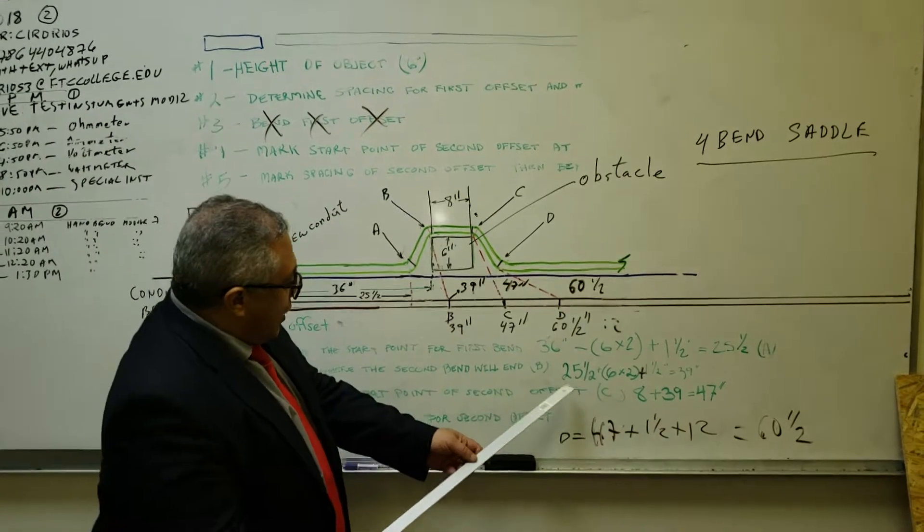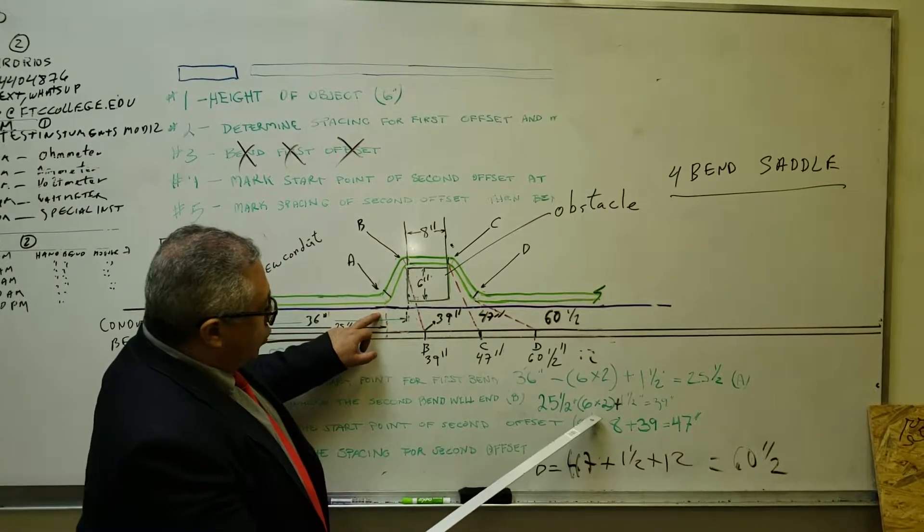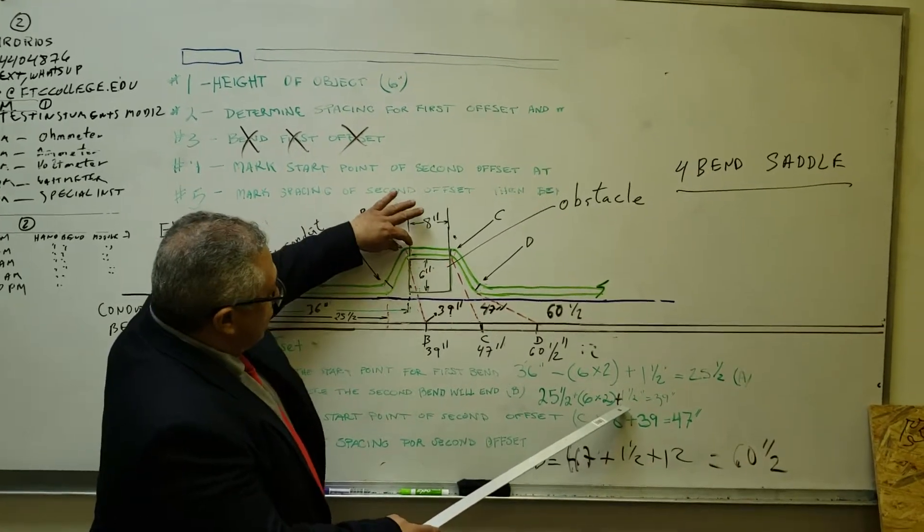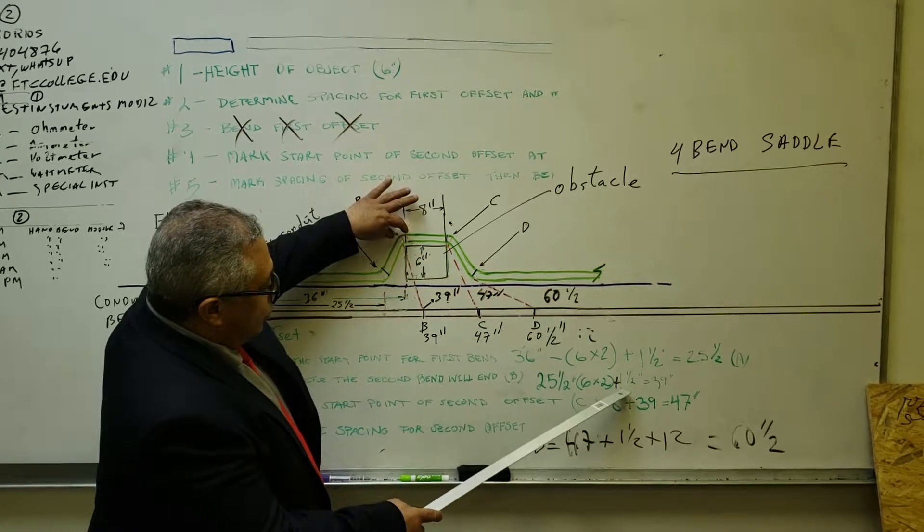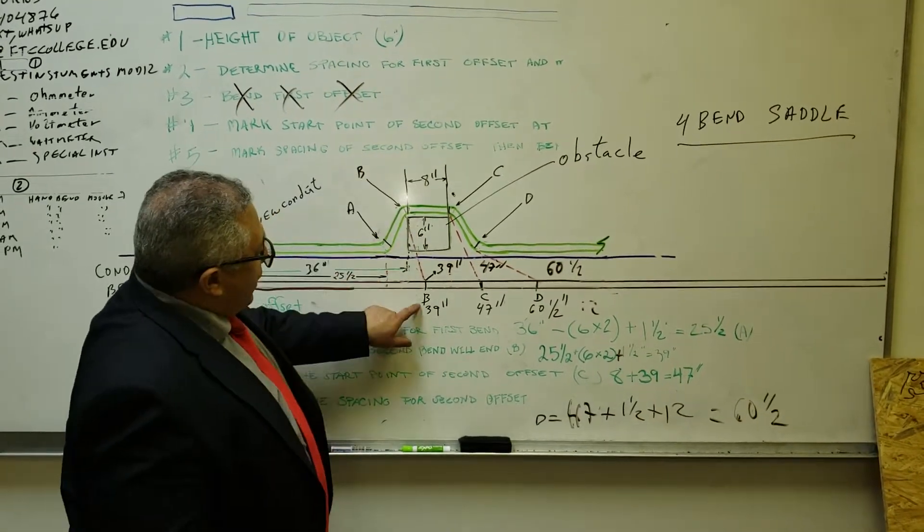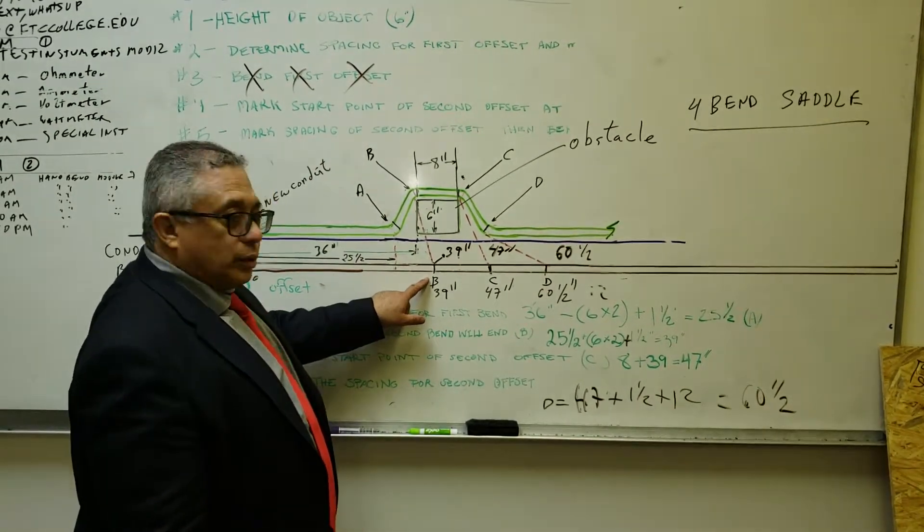So you have 25 and a half plus the multiplier times the height, which is 12, plus the shrink value, which is 1 inch and a half, and that gives us 39. That's point B, and we mark this in the conduit.